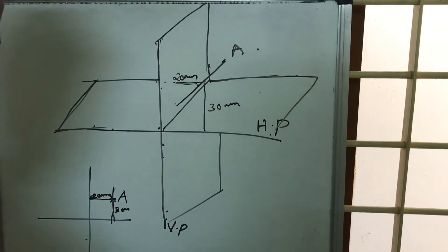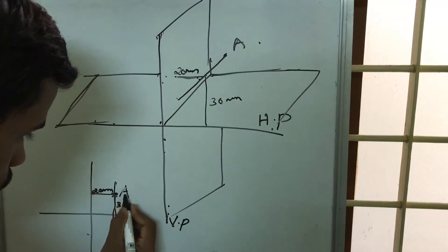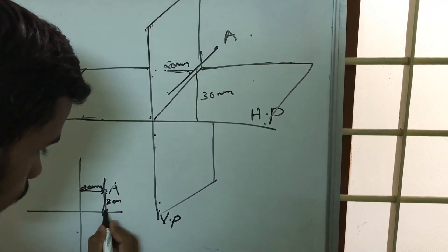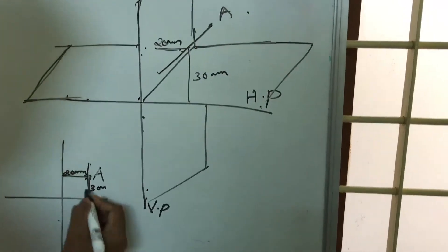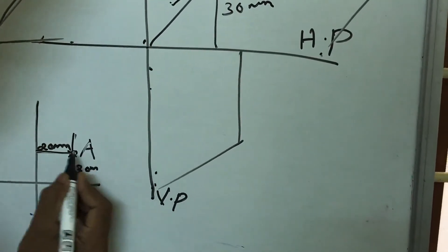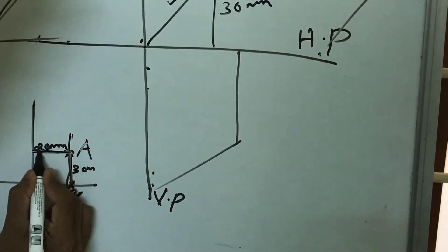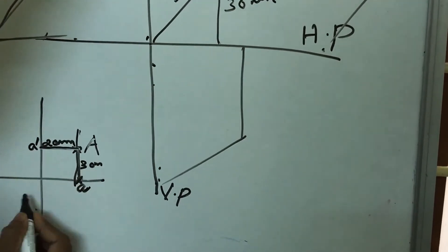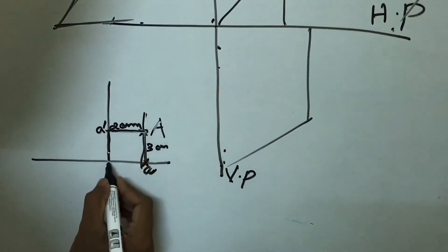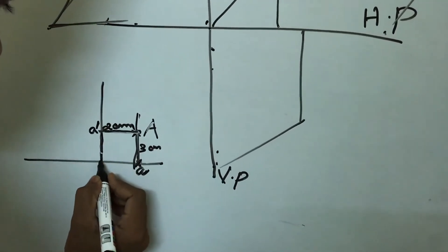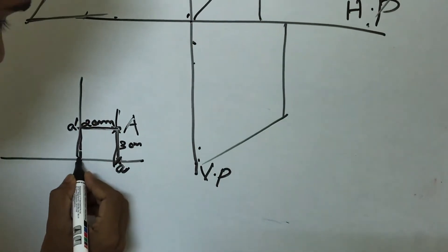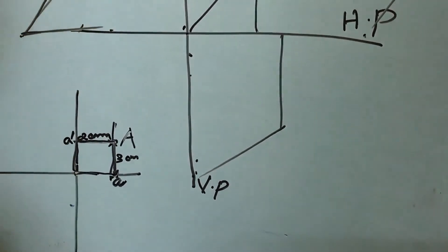We are projecting point A onto the horizontal plane — the top view is given the name lowercase 'a'. The front view is given the name 'a dash'. The front view a dash is 30mm above and 20mm in front of this point.